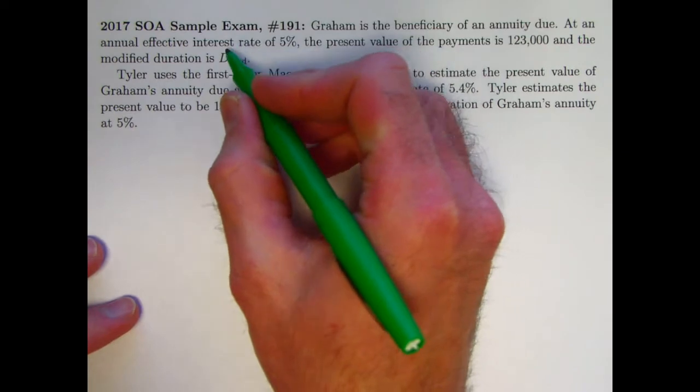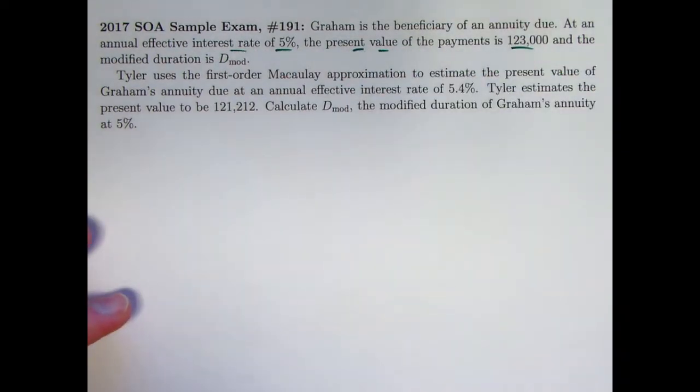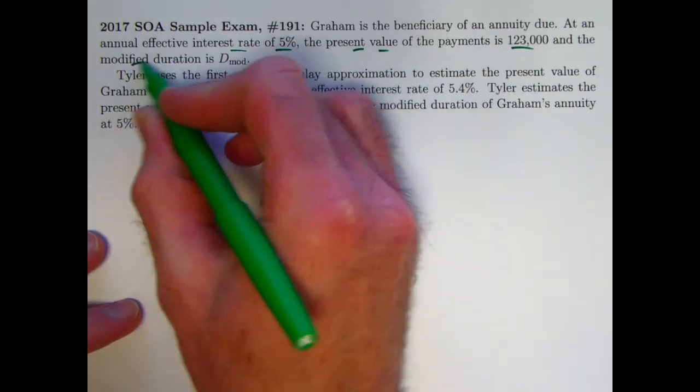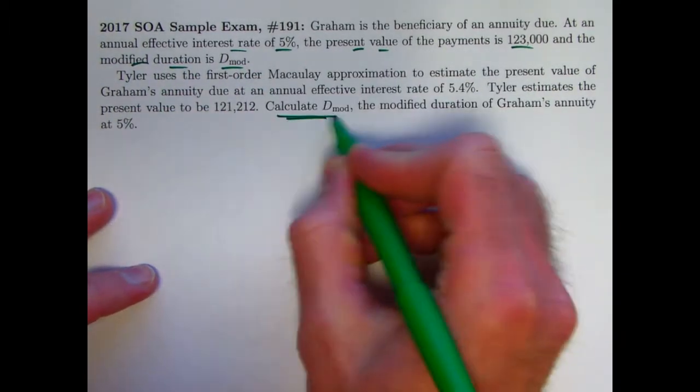At an effective interest rate of 5%, the present value of the payments is $123,000, and the modified duration is D mod. That's the thing we ultimately want to calculate at the end.